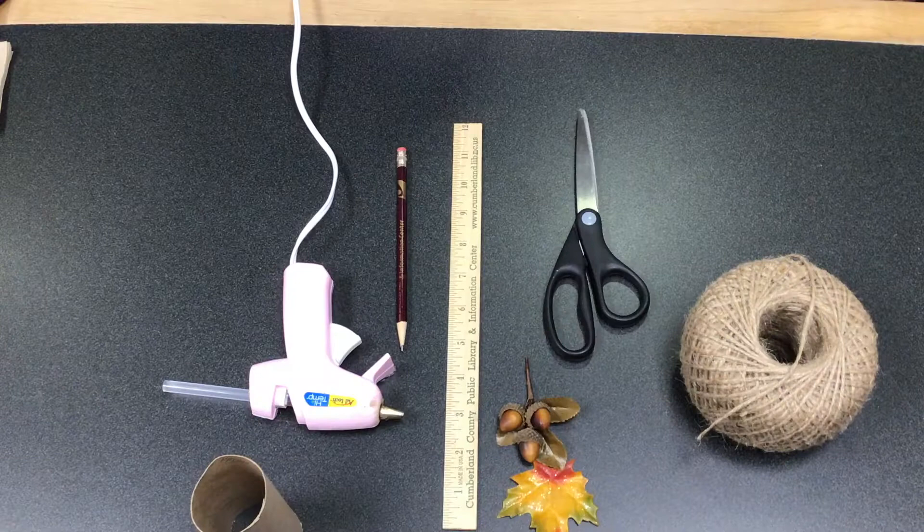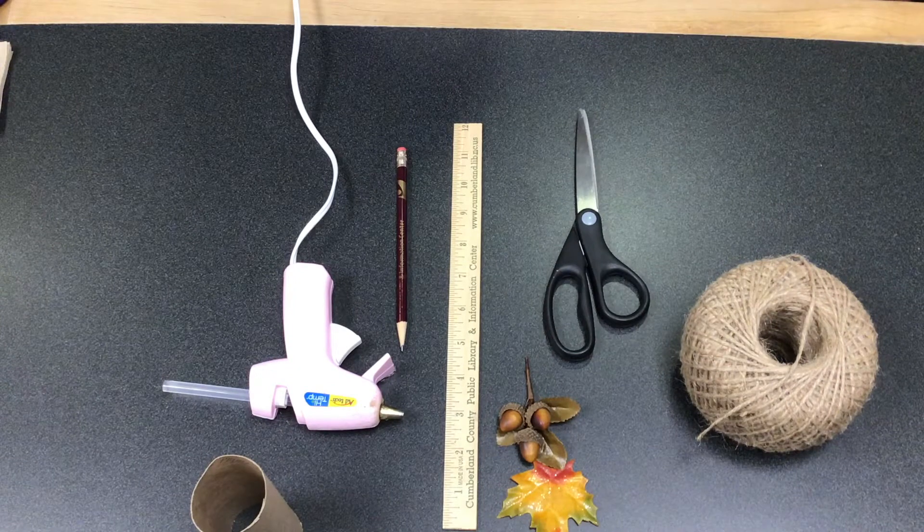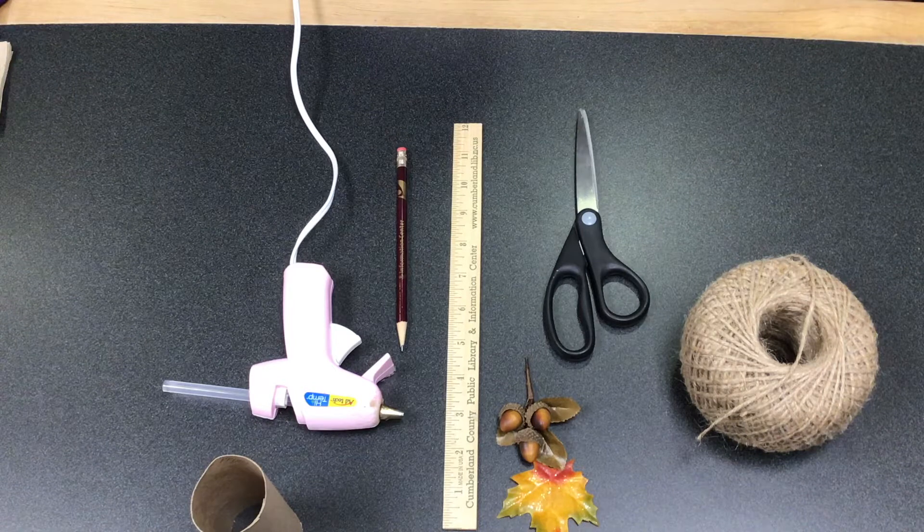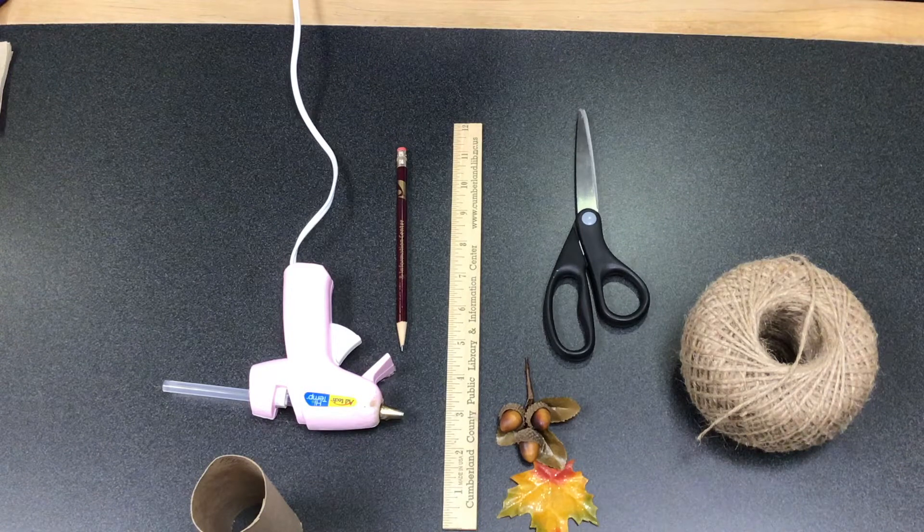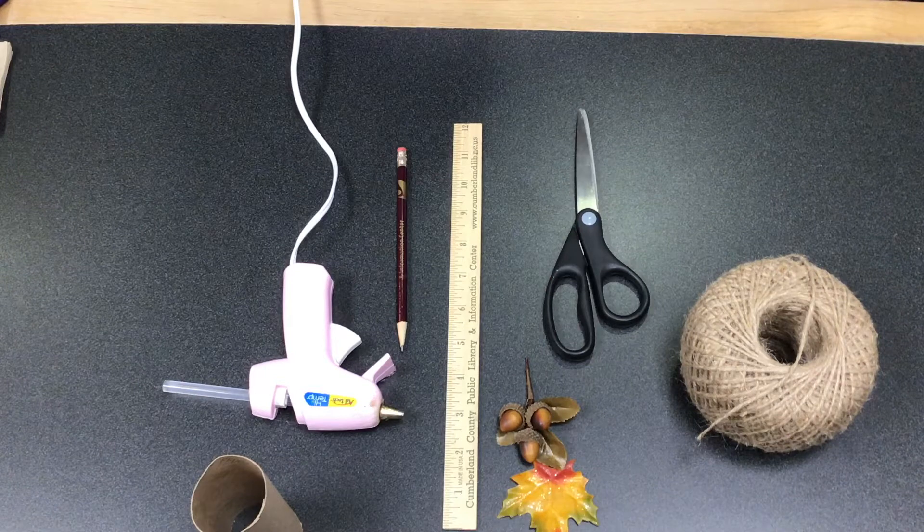Here are the materials needed for this project: toilet paper roll, jute wrapping twine or yarn, scissors, hot glue, glue gun, fall decorations, ruler, and a pencil.